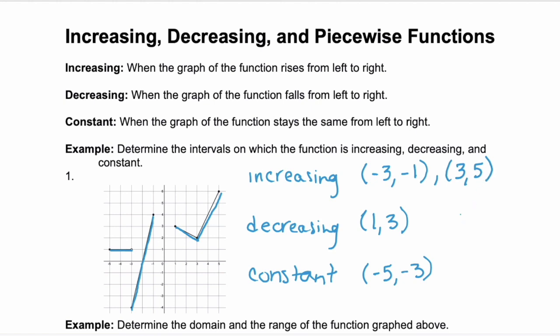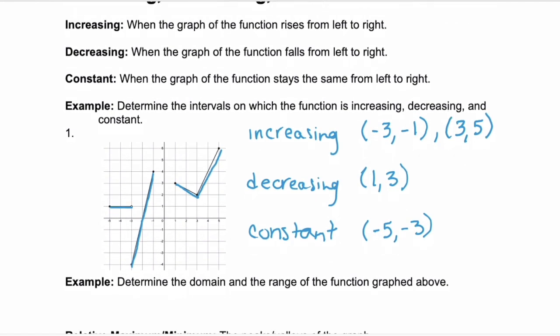These intervals are always in open notation because, for instance, the point 3 right here, this minimum, we can't declare that this is decreasing or increasing since it's a transition point. So we leave them as open.